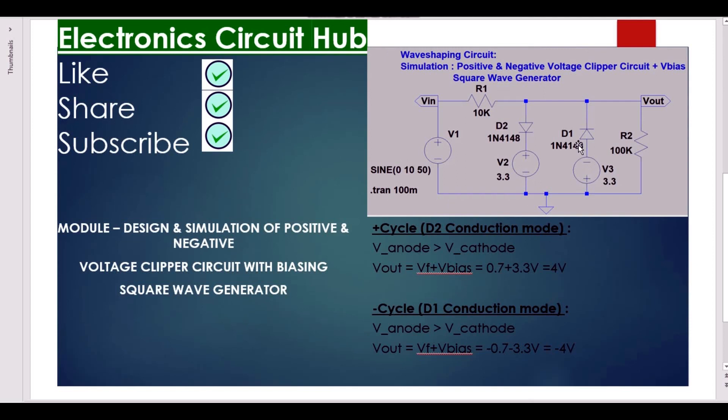For the negative half cycle, diode D1 conducts, it goes in conduction mode. Then V out equals V forward plus V bias, which equals minus 0.7 minus 3.3 volts, which equals minus 4 volts.